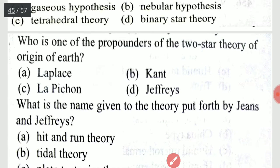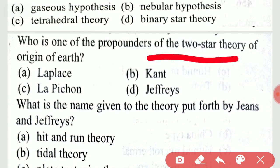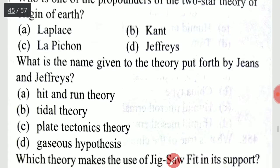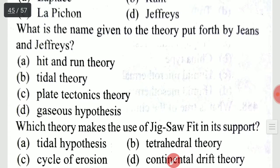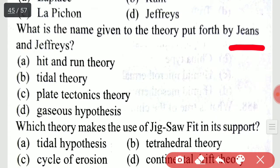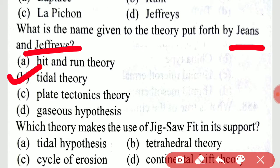Who is one of the propounders of the two-star theory of origin of the earth? What is the name given to the theory put forth by Jeans and Jeffreys? It is option B, the tidal theory.